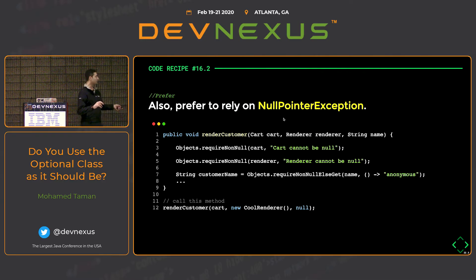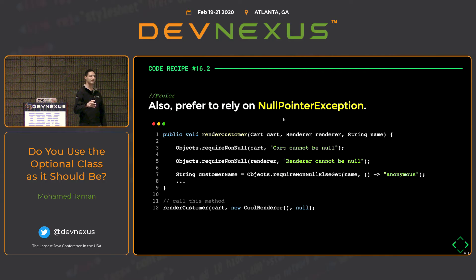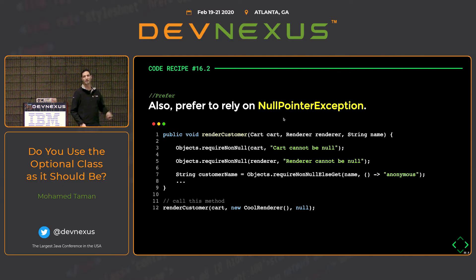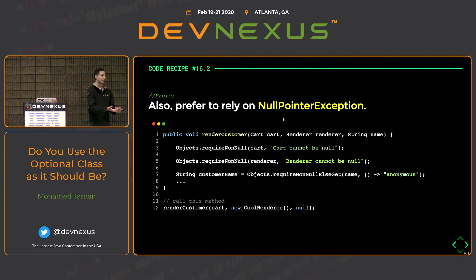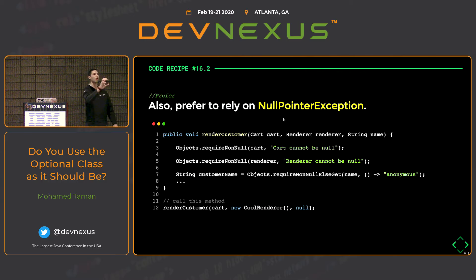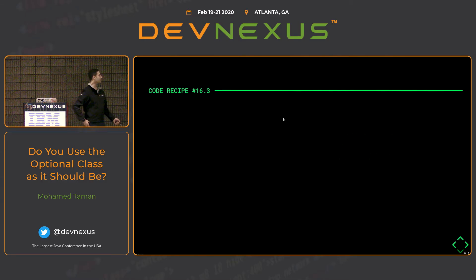You can also use Objects.requireNonNullElseGet() if you want to return a default value instead of throwing an exception — for example returning 'anonymous' for a missing customer name. And if you want a custom exception mechanism, you can build a utility class with a static requireNonNull method that accepts a supplier of your specific exception type, allowing you to throw any domain-specific exception with a custom message.